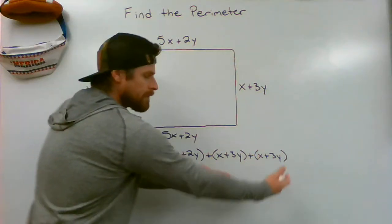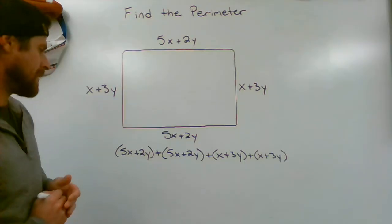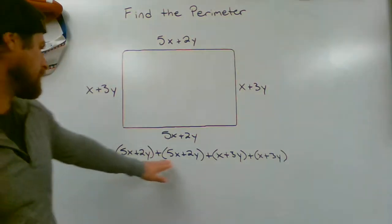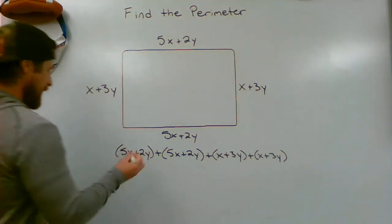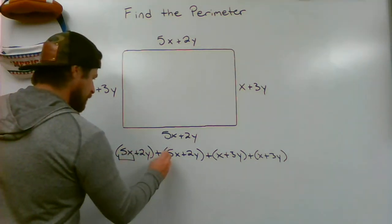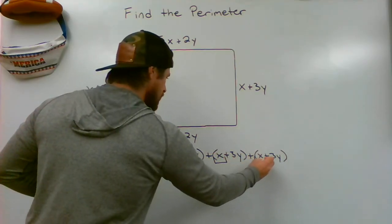We're going to add all of this together, and that will give us our perimeter of the given rectangle. Let me just make sure everything's good, and we are golden. So my x's will all need to be combined. Those are like terms.